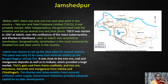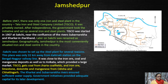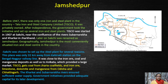After independence, the government took initiative. TISCO was started in 1907 near the confluence of the rivers Subanrekha and Karkhai in Jharkhand.